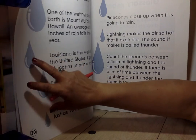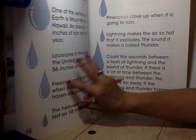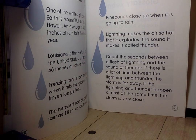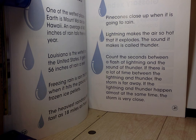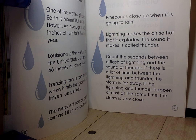Here's some more words — rainy day facts. One of the wettest places on earth is Mount Waialeale in Hawaii, with an average of about 460 inches of rain each year. Louisiana is the wettest state in the United States, getting about 56 inches of rain a year.